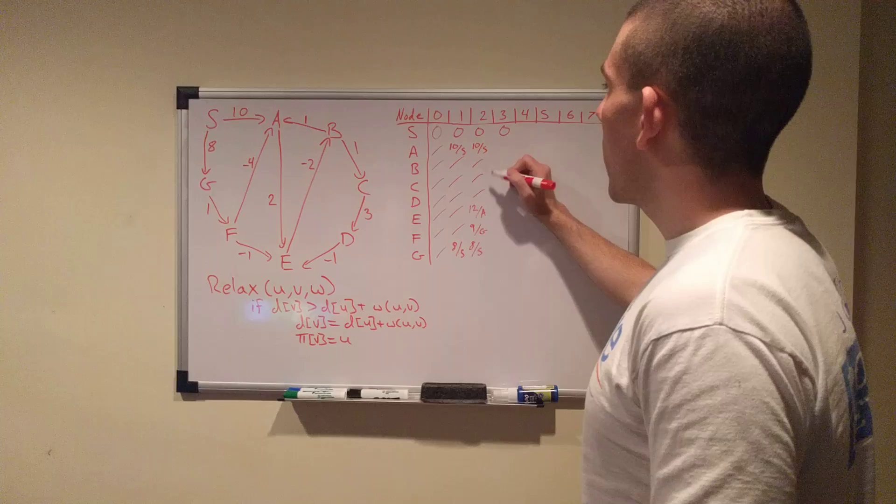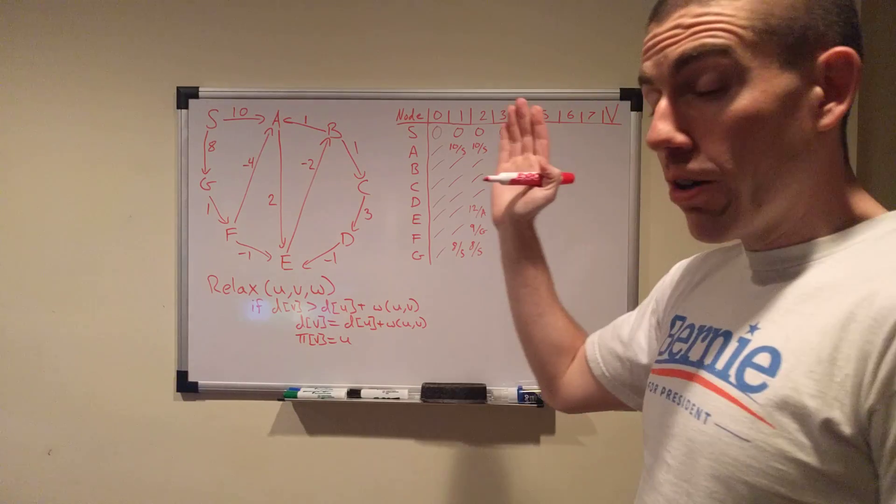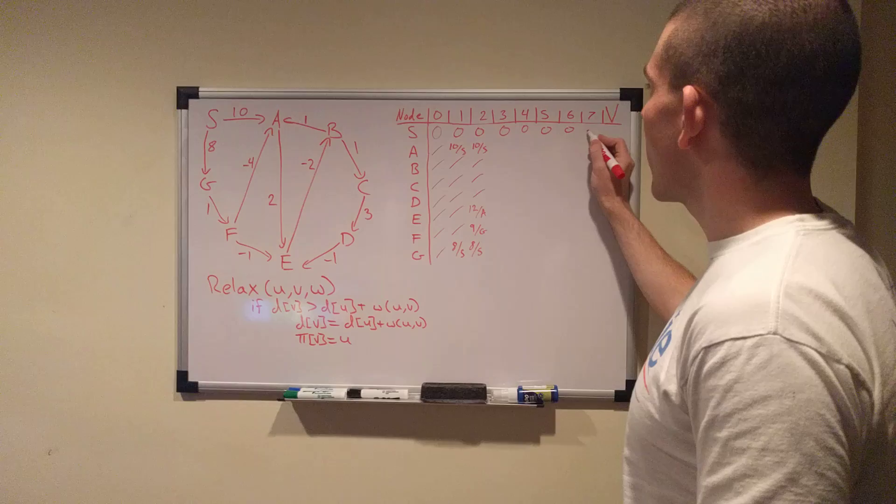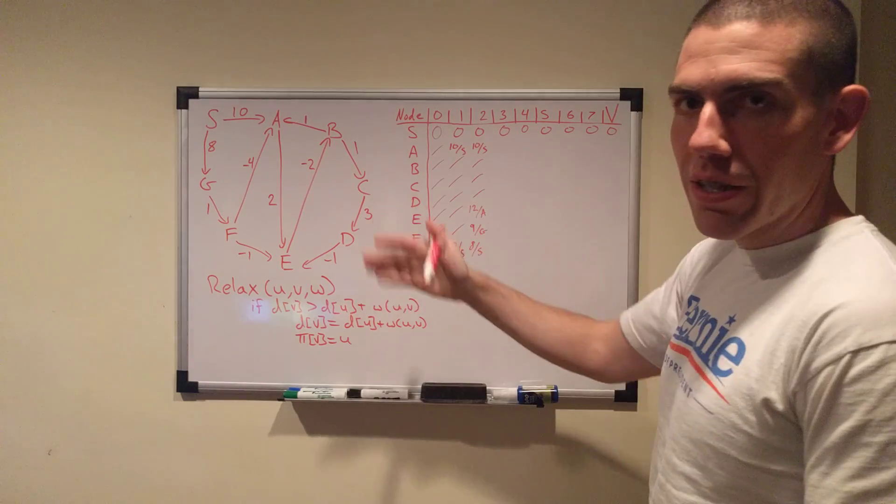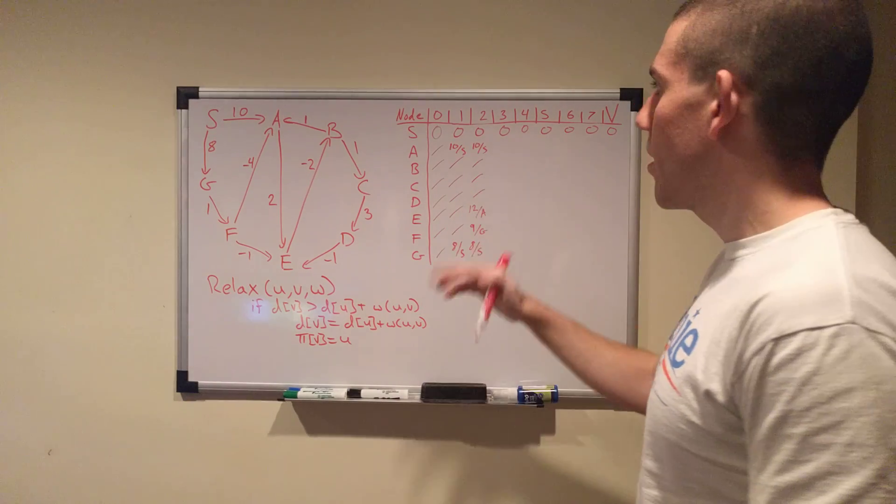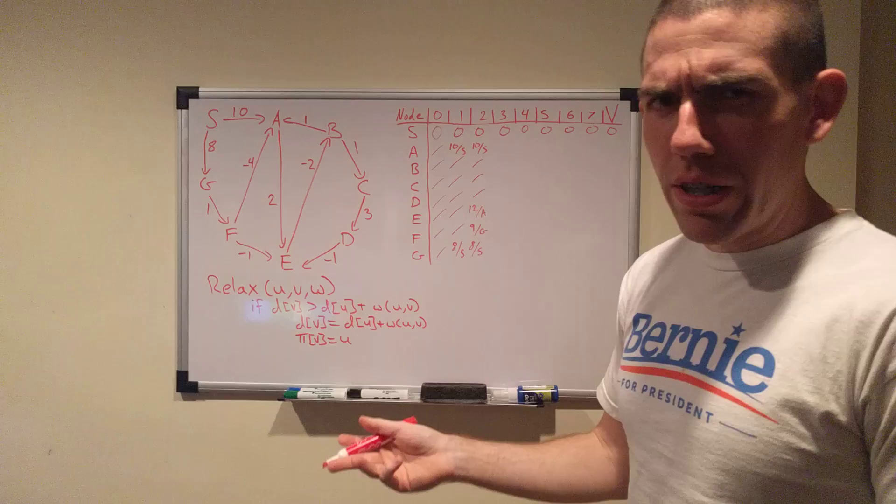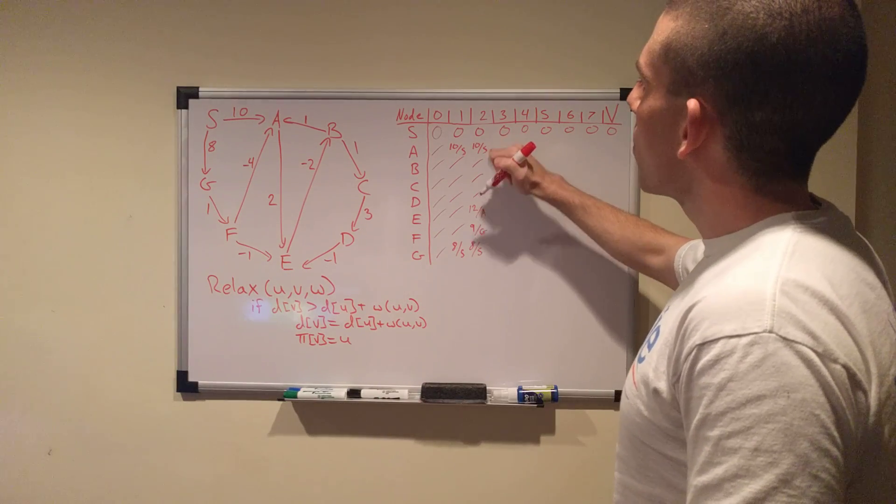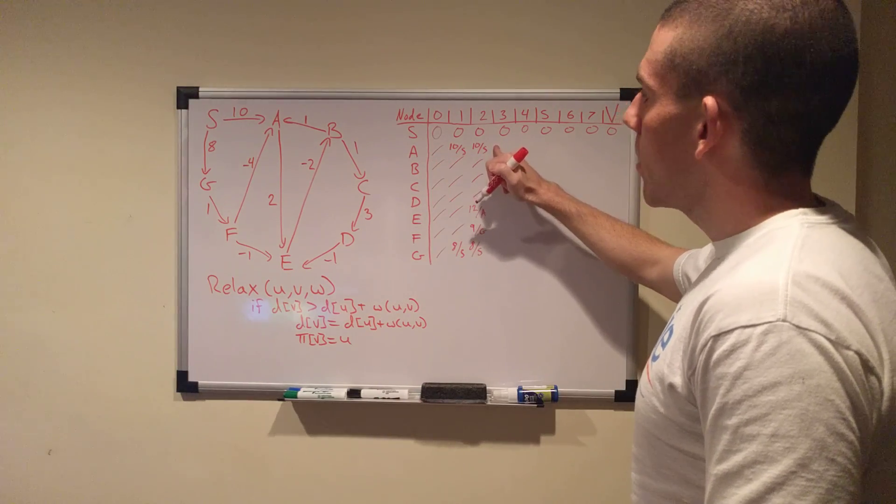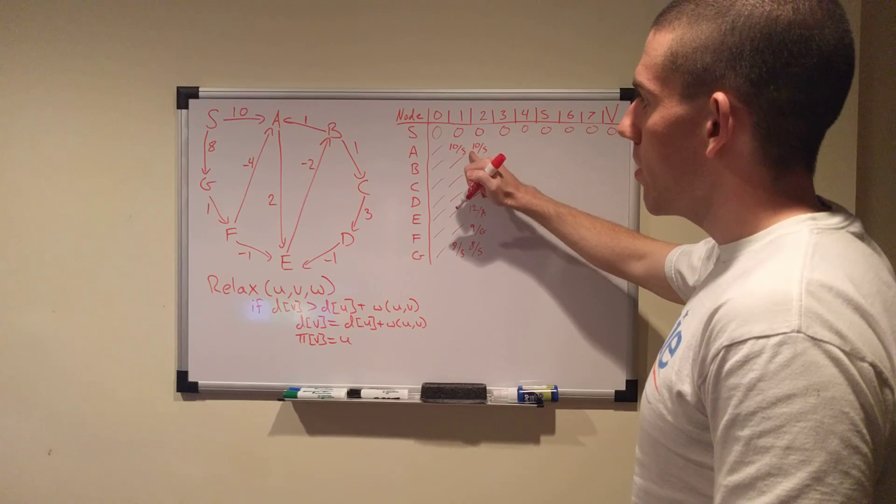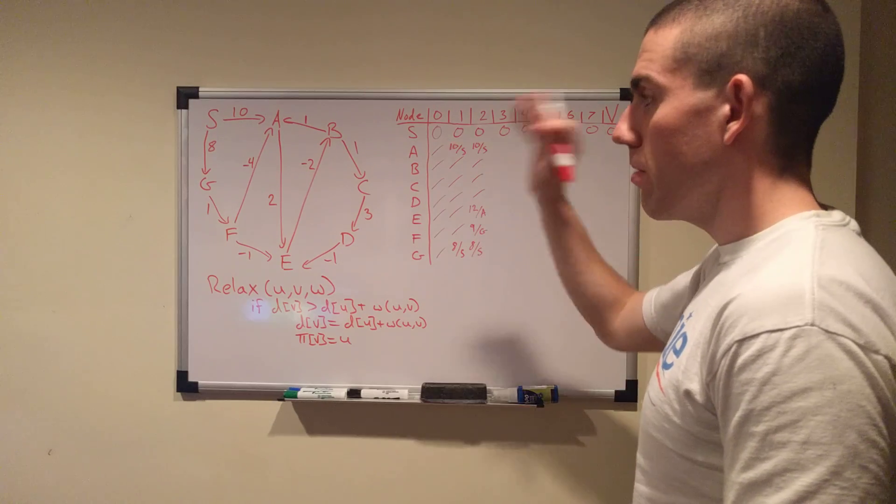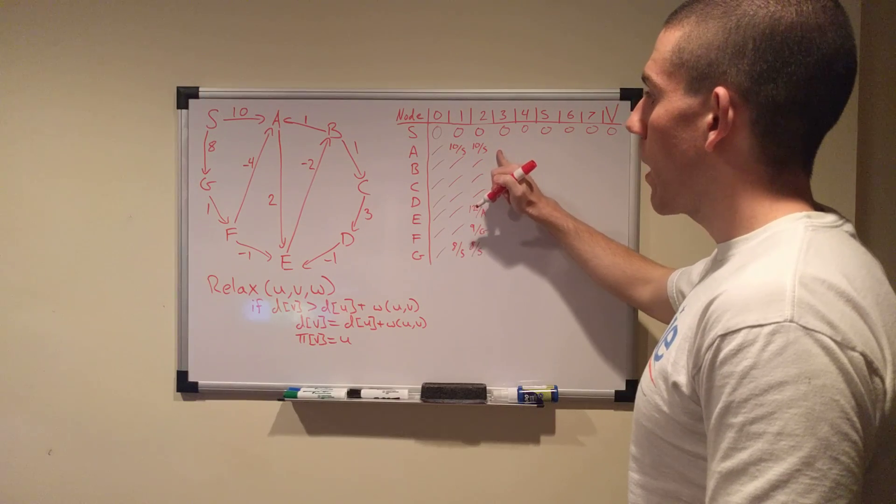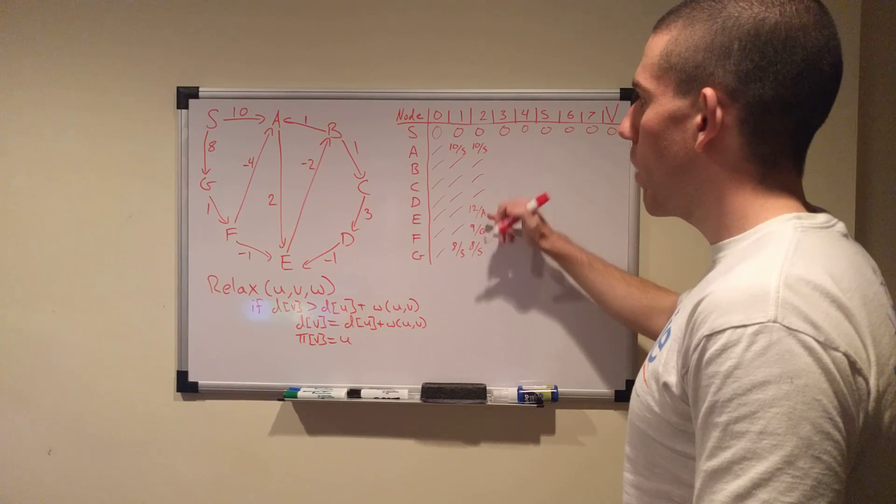Third iteration. S remains at a cost of 0. It's still 0 from itself. It always will be. In fact, if you're doing this by hand on a test or something to save time, you may as well. All right? Because if this changes, honestly, something is broken. And we relax again. So, A still has a cost of 10, so nothing is different from the last round. Nothing changed. If we relax it, it only has one outgoing edge. It only goes to E. It still has a cost of 12. Nothing changes.